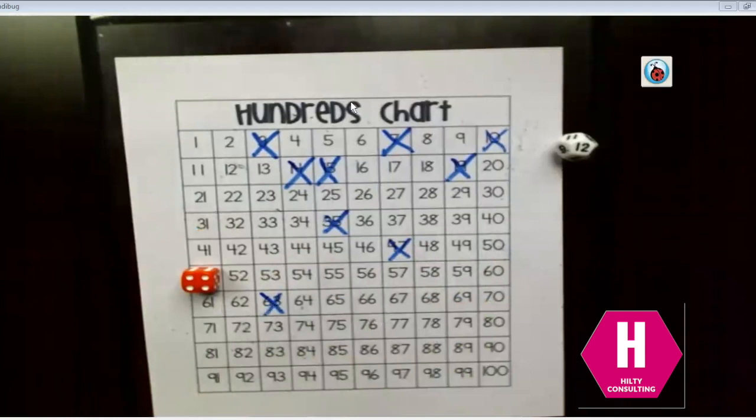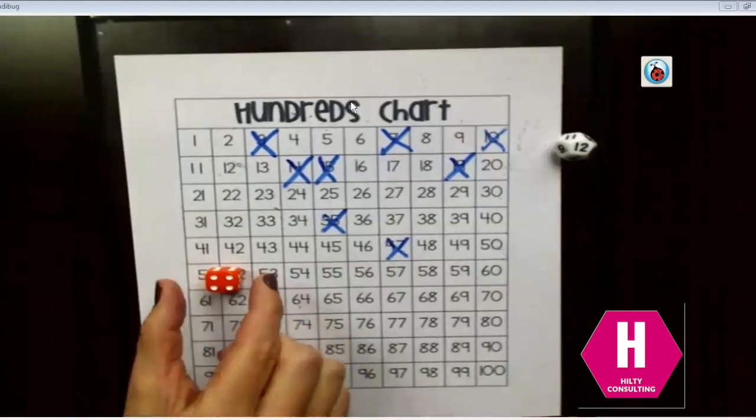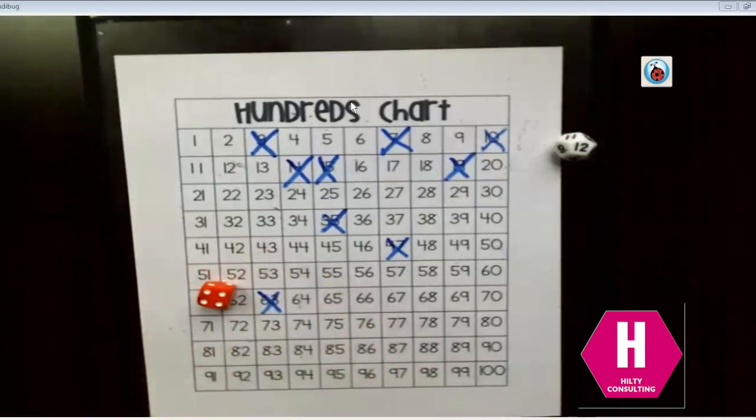Some variations to this game. Maybe you have two hundreds charts going and you have two children racing to 100. Let's say you have older kiddos and you want to have this race to 1,000. They're going to take their number. They're going to multiply it by 10 or by 100, trying to get themselves to 1,000. Let's say you're working on decimals. You're going to race to 10 and each of these is worth that many tenths. So this would be four tenths, five tenths, four tenths.